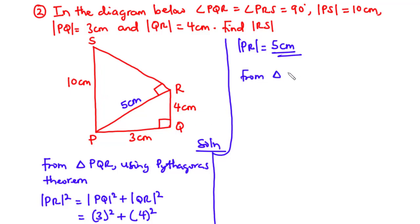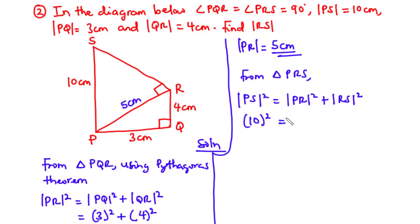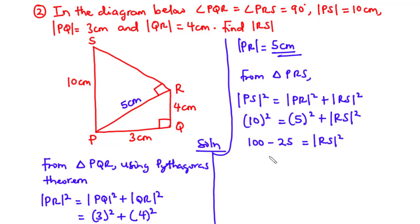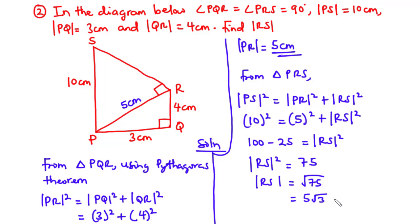From triangle PRS: PS² = PR² + RS². With PS = 10 and PR = 5, we get 10² = 5² + RS², so 100 = 25 + RS². Transposing gives RS² = 100 − 25 = 75. Therefore RS = √75 = 5√3 centimeters.